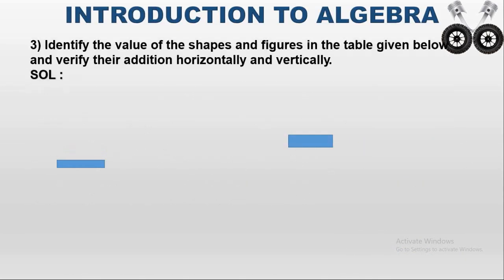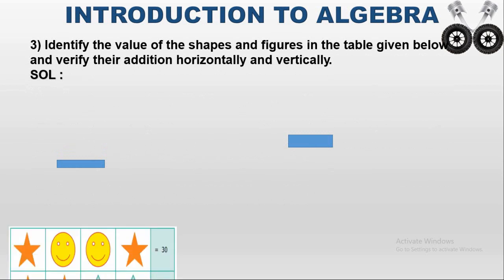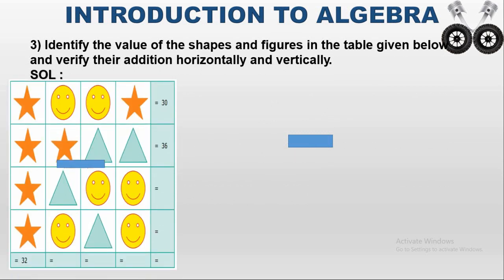Question number 3: Identify the values of the shapes and figures in the table given below, and verify their addition horizontally and vertically. The shapes in the table are triangles and the figures are stars and smileys. The horizontal direction refers to rows (the sleeping line) and the vertical direction refers to columns (the standing line).